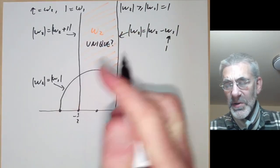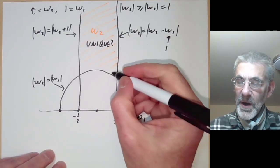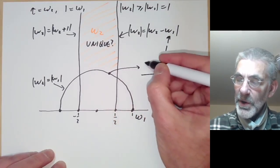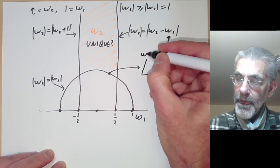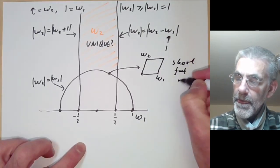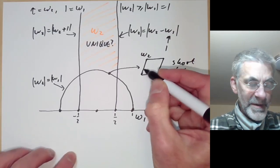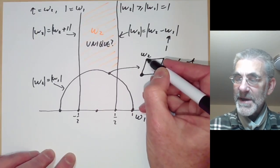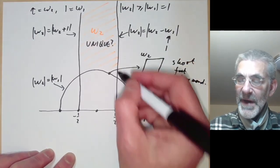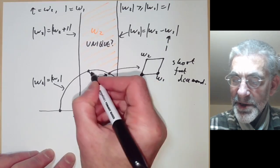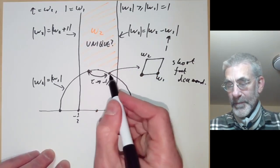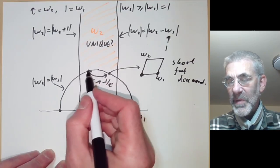And it turns out it's not quite unique. So what can happen is first of all if omega-2 is somewhere here then omega-1 and omega-2 form a sort of short fat diamond. And what happens is that omega-1 and omega-2 have the same absolute value. So instead of choosing omega-1 we could have chosen omega-2. And if we do that we find that corresponds to changing tau to this point over here. So this is tau goes to minus 1 over tau. So really these two points correspond to the same lattice.